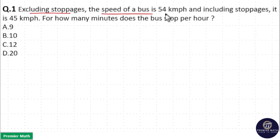Excluding stoppages, the speed of a bus is 54 kilometers per hour, and including stoppages it is 45 kilometers per hour. For how many minutes does the bus stop per hour? Here, first I will explain the short trick, then I will explain the concept.